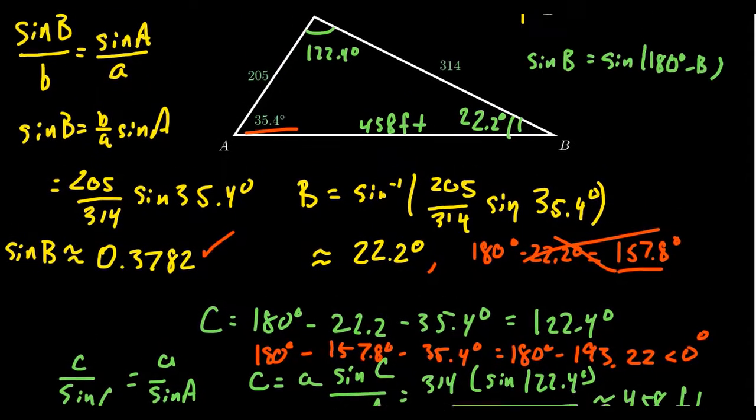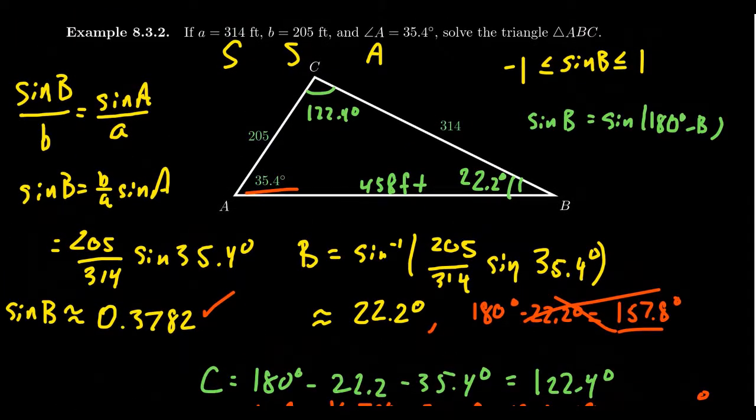Therefore, there's only going to be one triangle that solves this situation. This is what happens when you try to solve the ambiguous case using the law of sines. You have to make sure you check: is the ratio acceptable? If it is, that means there's one or two solutions. If the sine ratio is too big or too small, there's no solutions.